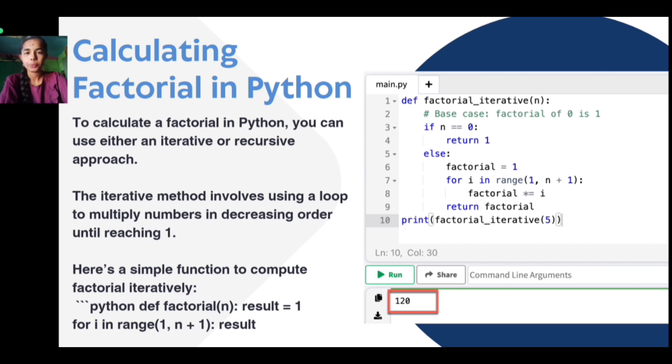Here is a sample function to compute factorial iteratively in Python: def factorial(n): result = 1; for i in range(1, n+1): result *= i; return result. For example, factorial(5) returns 120.